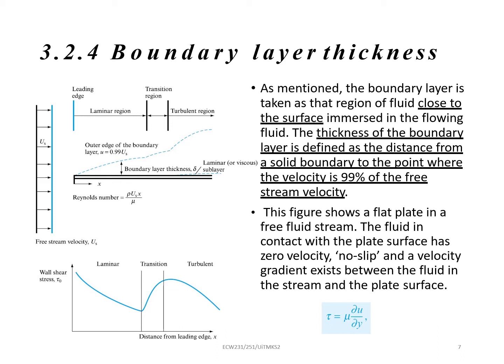Then 3.2.4 is related to boundary layer thickness. As mentioned in the previous slide, the boundary layer is taken as the region of fluid close to the surface. And then the thickness of the boundary layer is defined as the distance from a solid boundary to the point where the velocity is 99% of the free stream velocity. The thickness of the boundary layer is actually distance from solid boundary.